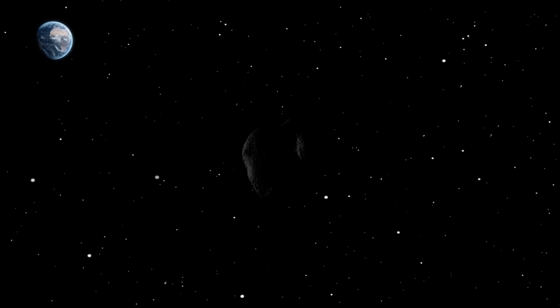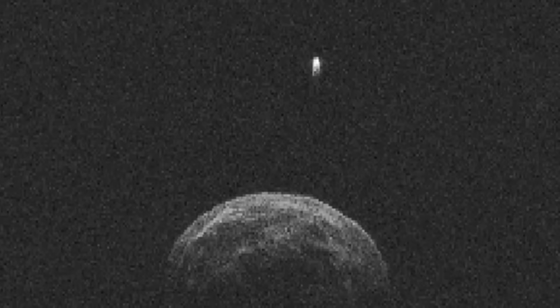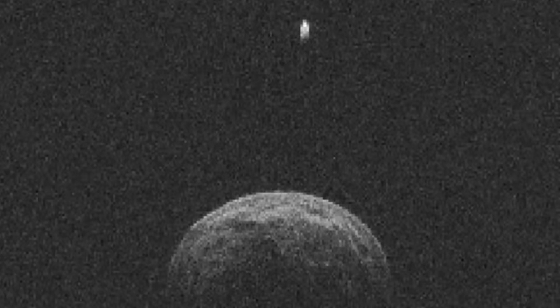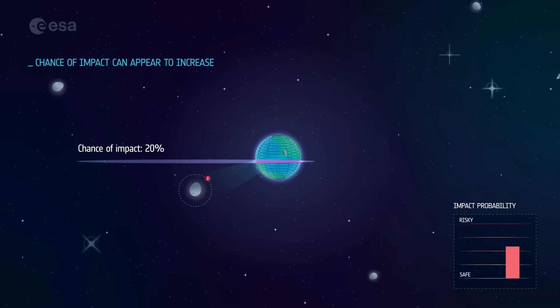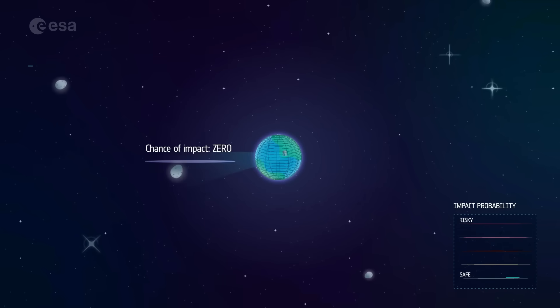However, as more observations come in, this information is subject to change. The problem is, we have just a couple of months left to track this asteroid before it disappears from view. New observations will refine its orbit, likely reducing the chances of impact to nearly zero.